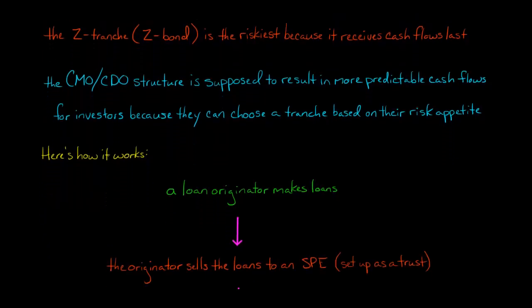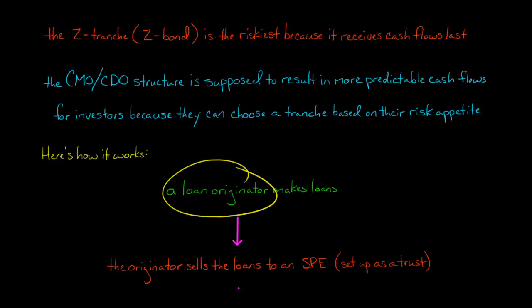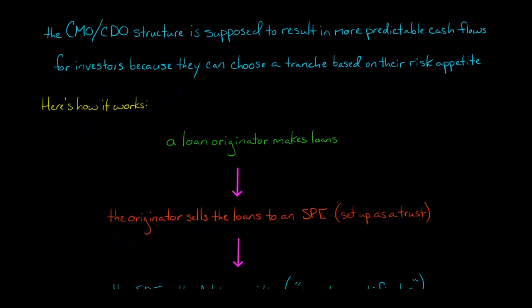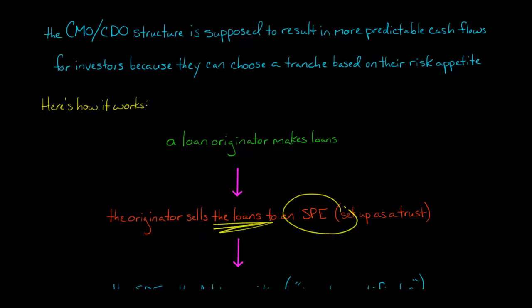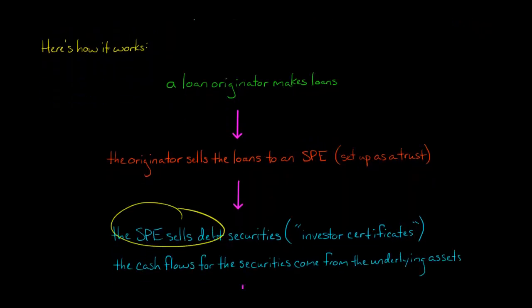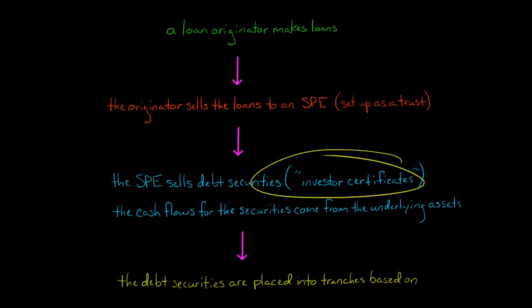Here's an overview of how the process works. First, we've got a loan originator — let's say a bank — originating mortgages, lending to people to buy homes or for residential real estate. The bank then sells those mortgages to a special purpose entity, typically set up as a trust. That special purpose entity then issues debt securities — investor certificates. If you're an investor and you buy one of these certificates, you're getting the cash flows from the underlying assets, which in this case are the mortgages.